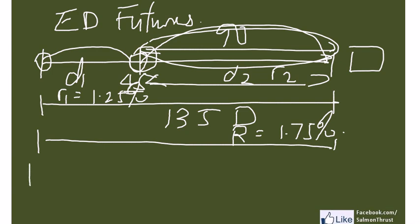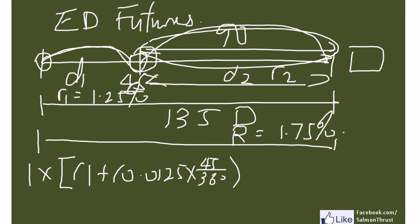It starts off with $1. Assume we're going to invest for this period of time. So it's equal to 1 plus 0.0125 times 45 days divided by 360. After we have the money here, we invest for another 90 days, which means we have to multiply by 1 plus R2 times 90 over 360.